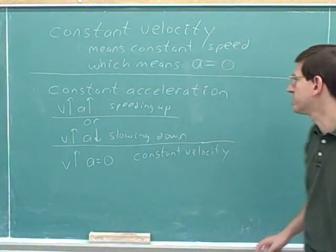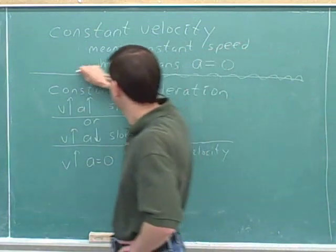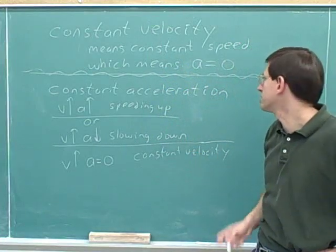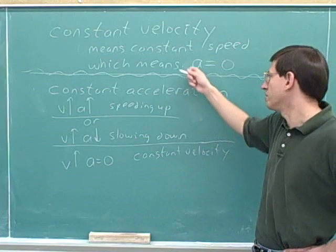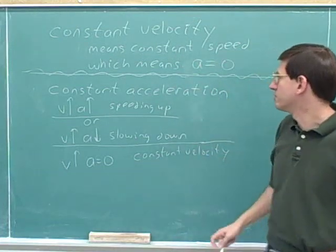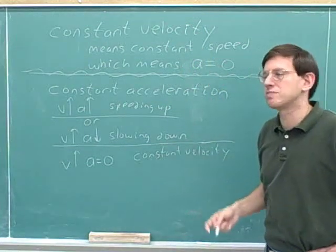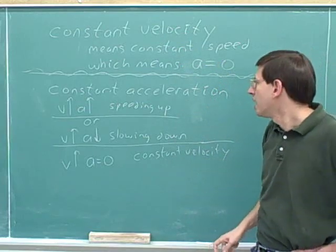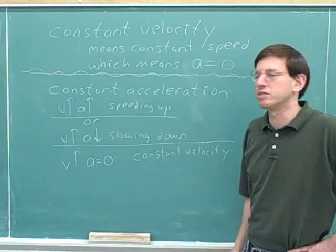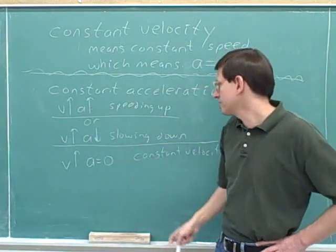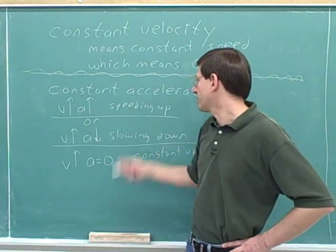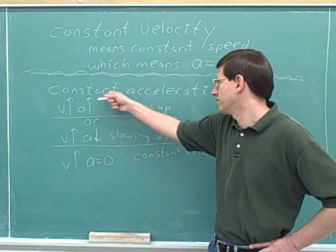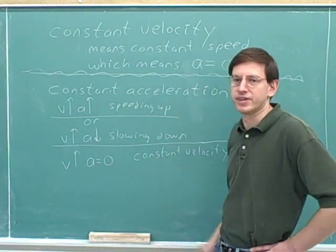Here's a summary of what these terms mean for one-dimensional motion. Constant velocity in one-dimensional motion just means you have a constant speed, which means you don't have any acceleration — your acceleration would be zero. Notice that constant velocity does not just mean your acceleration is constant; it means much more than that. Constant velocity means your acceleration is zero. If you have a constant acceleration, there are many different situations: you could be speeding up, slowing down, or if your acceleration is zero, you would also have a constant velocity. You can't just assume that the word 'constant' in front of acceleration means you can also put 'constant' in front of velocity.